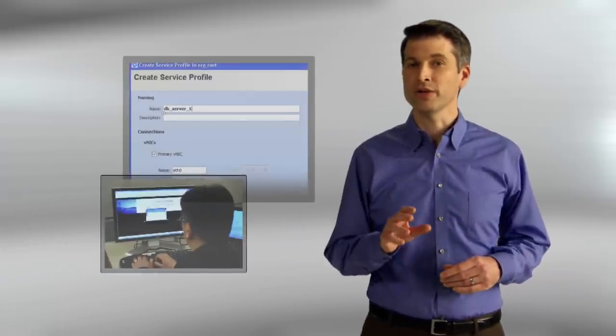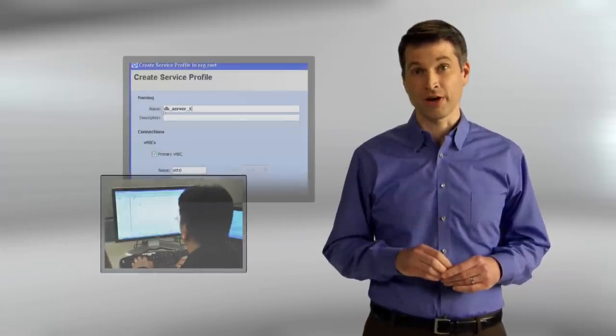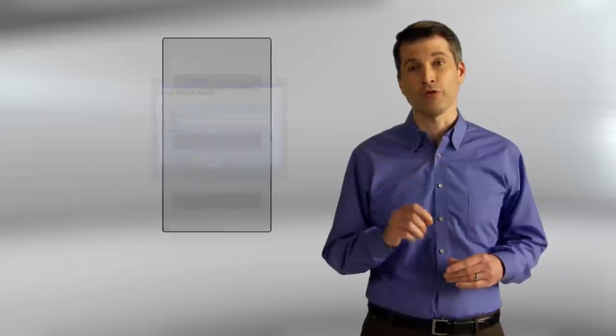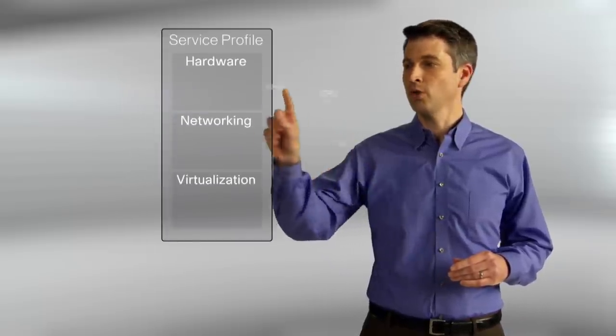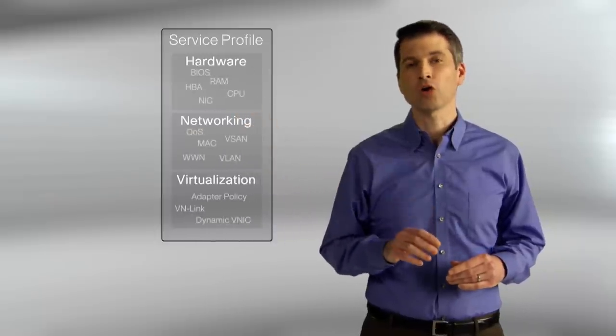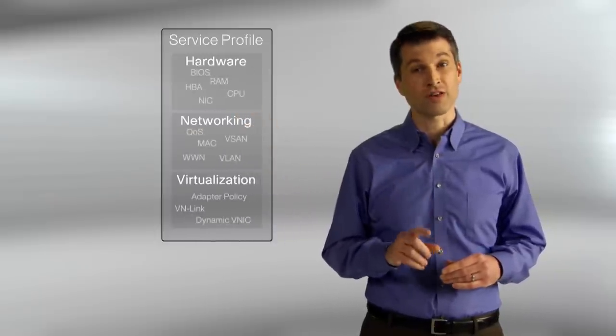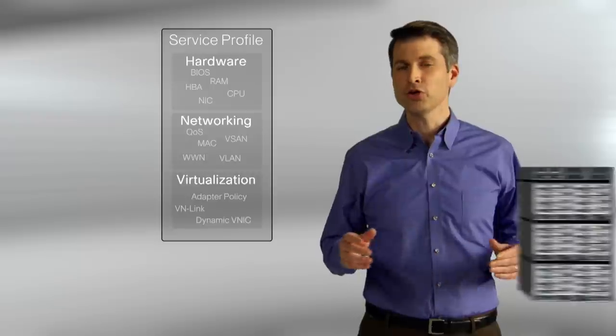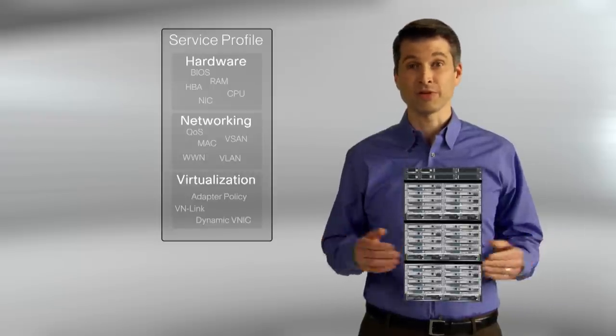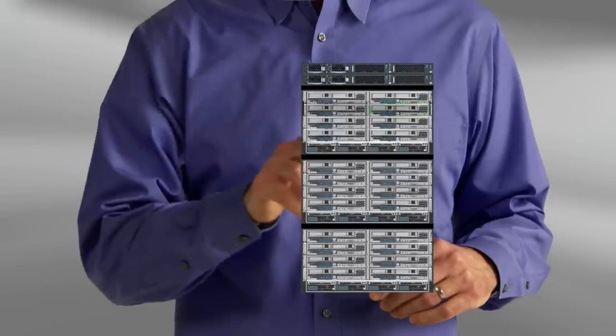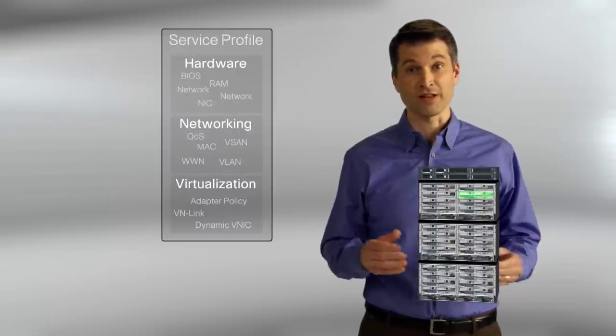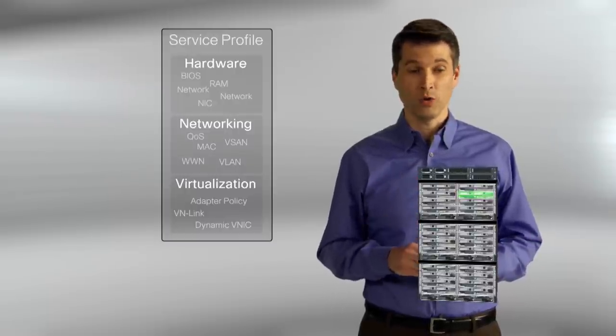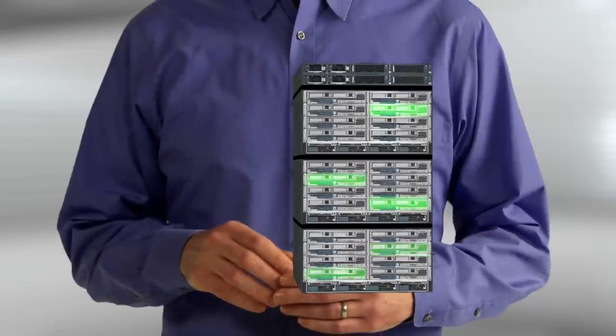Cisco Unified Computing System radically simplifies that process by the use of service profiles. A service profile allows you to manage your system holistically, by combining the hardware, networking, and virtual components into one pre-configured template. To meet your new business demands, it's now as simple as deploying service profiles to Blades. By associating these service profiles with business policies, when we need more capacity, we can get it, at the press of a button. We can even automate the whole process if we choose.